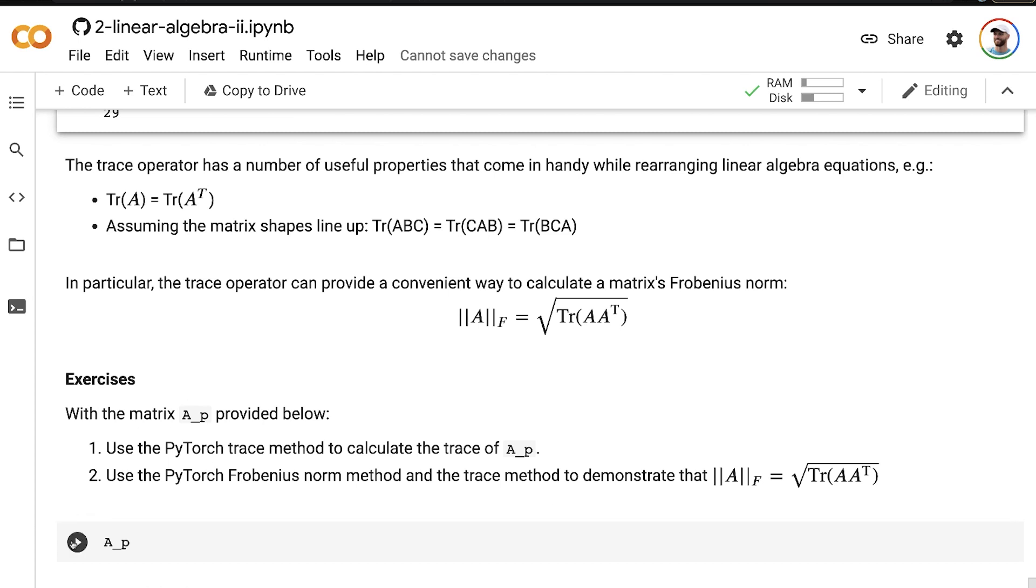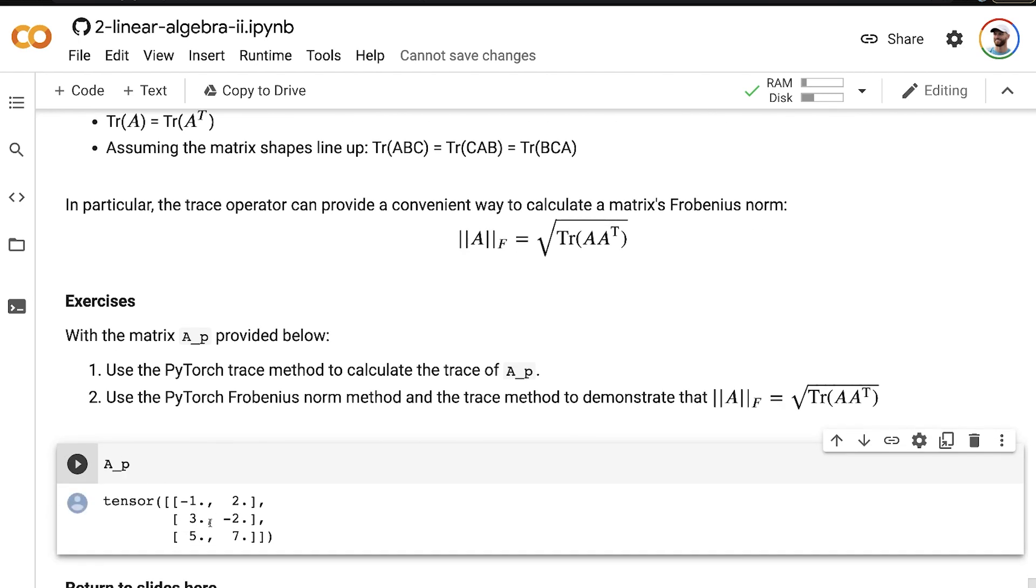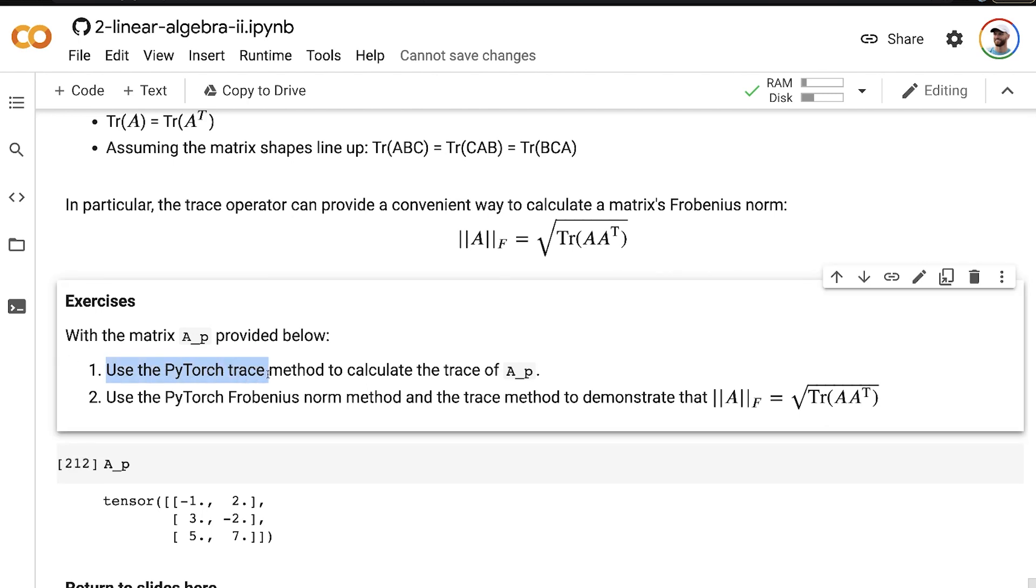let's use the matrix AP here, and for two exercises for you to carry out on your own, go and look up using your favorite search engine on the internet to find the PyTorch trace method, and then use it to calculate the trace of AB here.